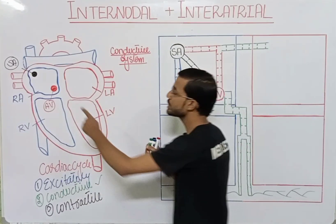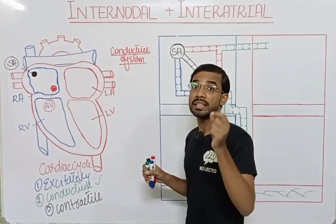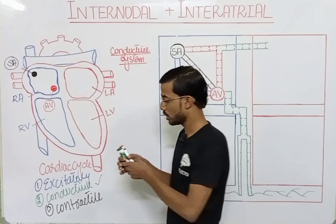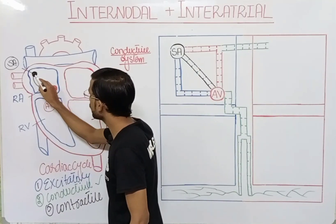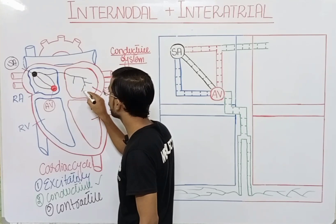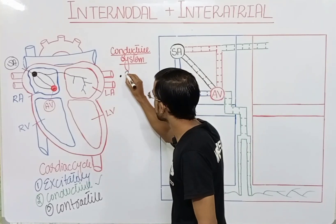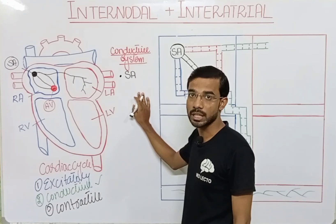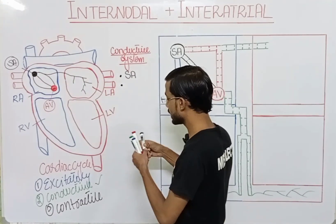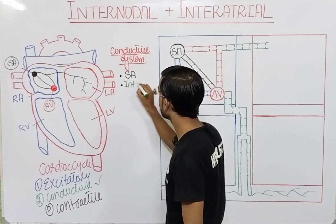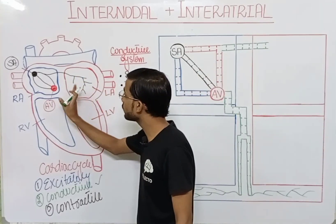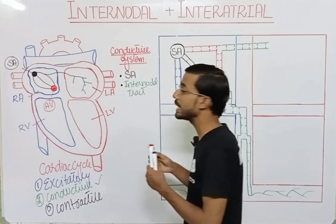The signal generates in the SA node. After its generation, the signal or impulse travels to the AV node and to the left atrium through different tracks. From the SA node, the signal travels to the AV node and at the same time it also travels to the left atrium through different tracks. The track that exists between the two nodes is called the internodal track, and the track between the left atrium and the right atrium is called the interatrial track.